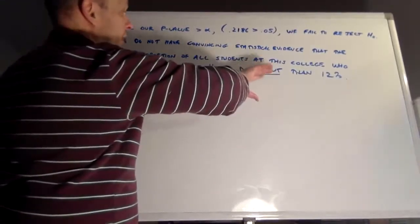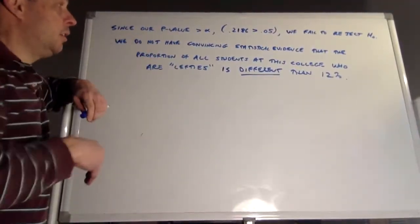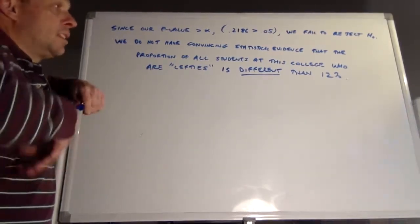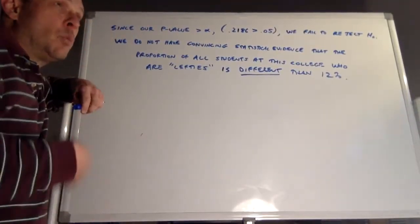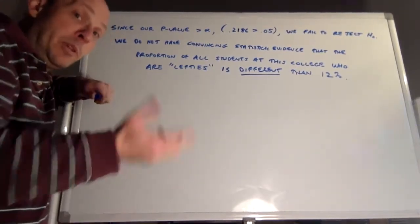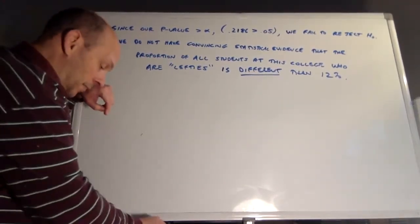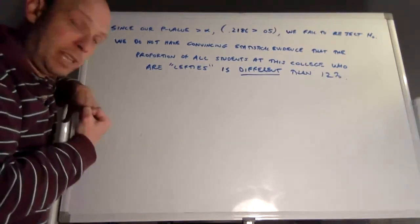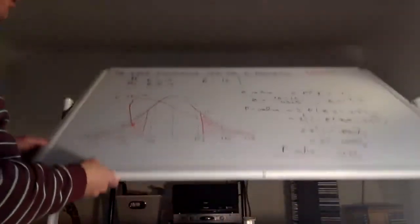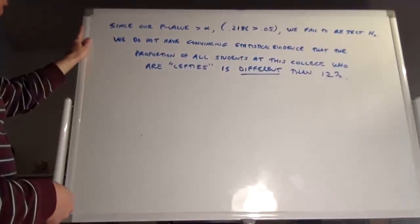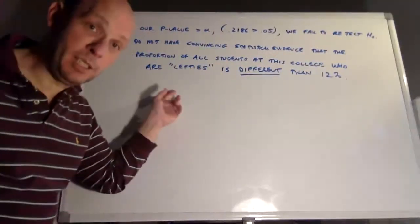Notice: even though our sample ended up on the higher side of 12%, you cannot write the conclusion as 'we don't have evidence it's larger than 12%.' That's what we'd do for a one-sided test. Since Simon chose a two-sided test going in, the conclusion must say 'different than 12%.' We've now completed all five steps: hypotheses with significance level and parameter definition, naming the test, checking conditions, finding the P-value, and writing the conclusion in real language.